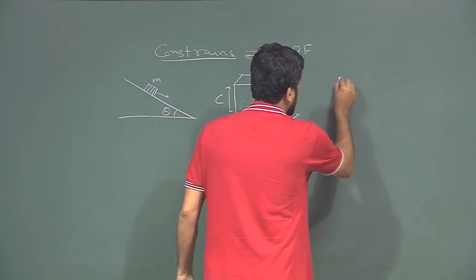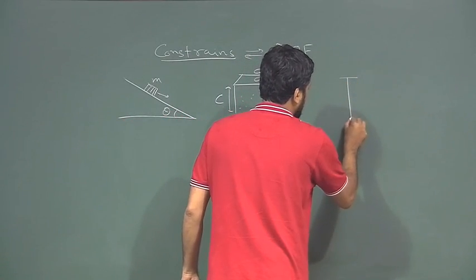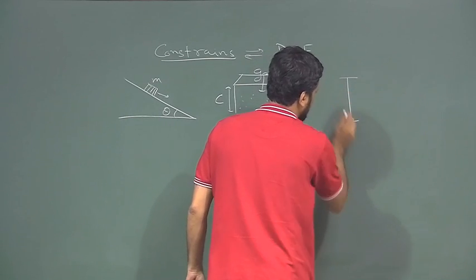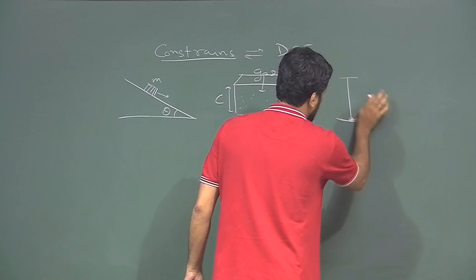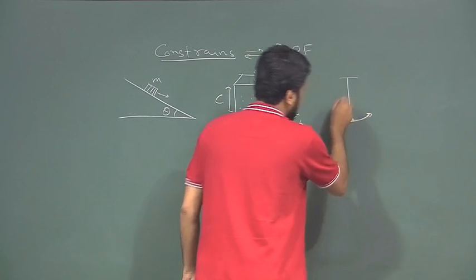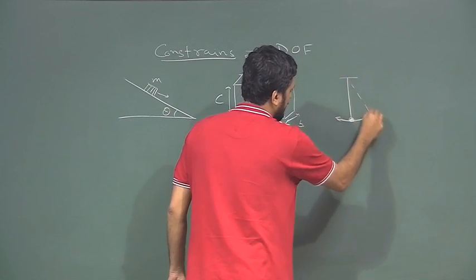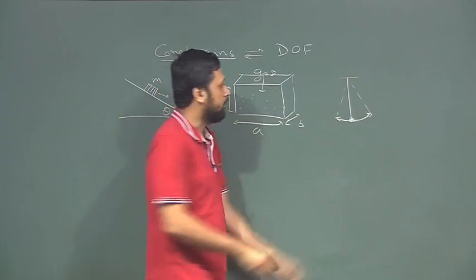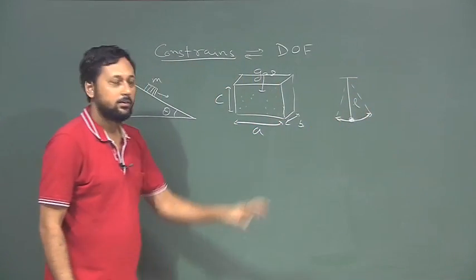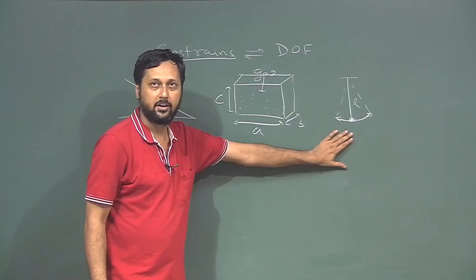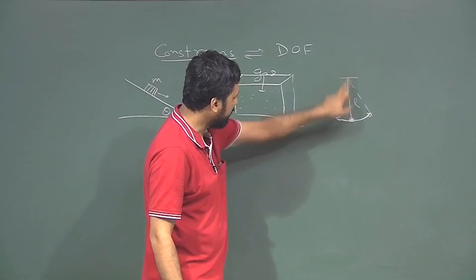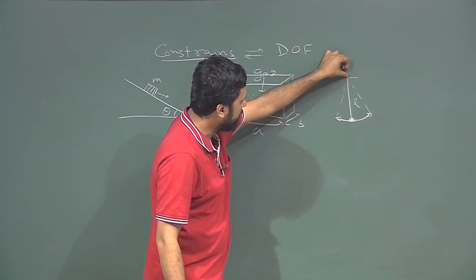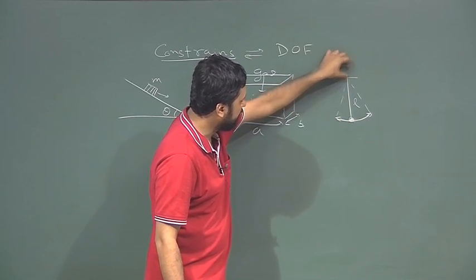Another very common example is a simple pendulum which is swinging. A simple pendulum can go here, go there — anywhere on a circle of radius L, L being the length. This is also a system of constraint, because the bob has to stay at a distance within length L from the pivot.